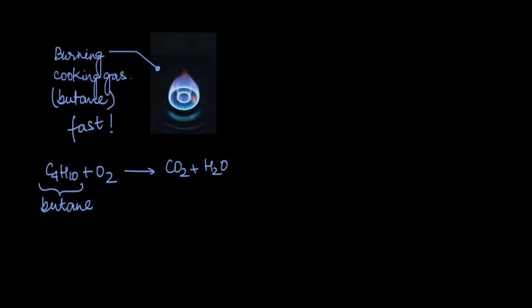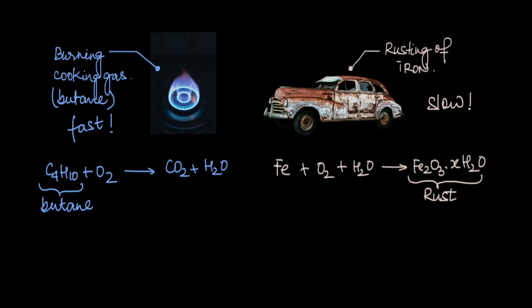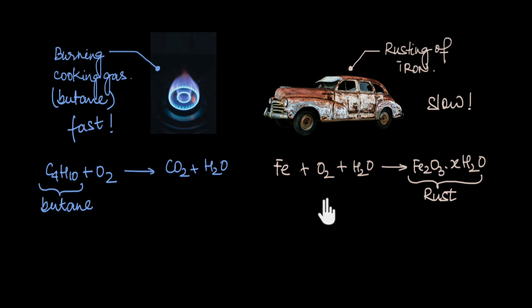Chemical reactions happen at many different speeds. They can be fast, like when you turn on your gas burner and ignite it and it immediately catches fire, or it can be slow, like the slow rusting of an old abandoned car. But how exactly do we measure the speed or the rate of a chemical reaction?